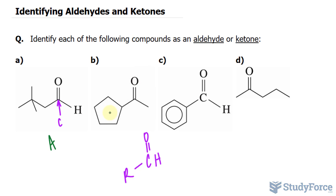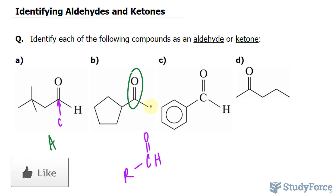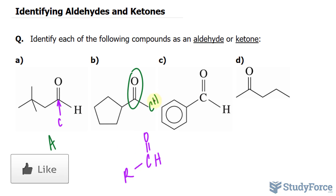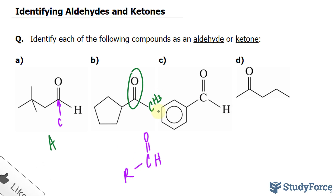Look at this one in comparison. We have carbon double bonded to oxygen once again right here, except to the right of this carbon is another carbon molecule — that is a carbon with three hydrogens. So this is a ketone as opposed to an aldehyde.